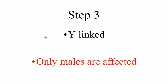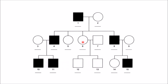The next step is to identify a Y-linked pattern. The golden rule here is: only males are affected. For example, in this pedigree chart all males are affected, and there is no skipping of generations. Therefore this type of inheritance is Y-linked inheritance.